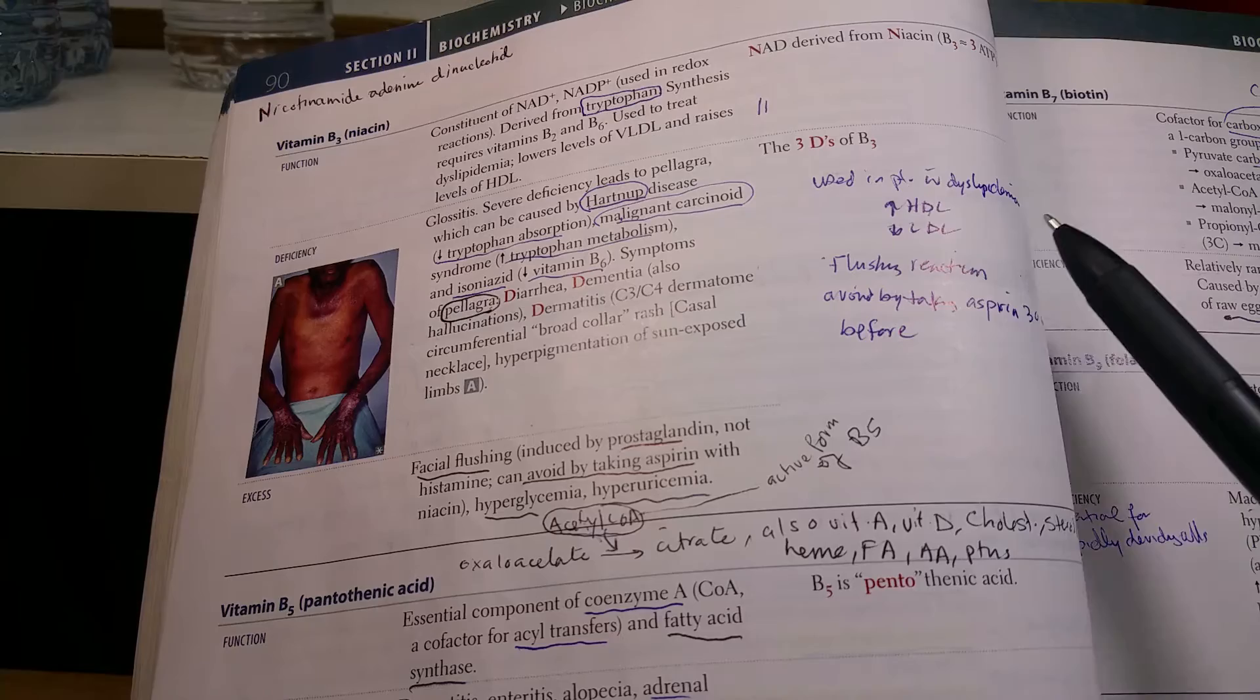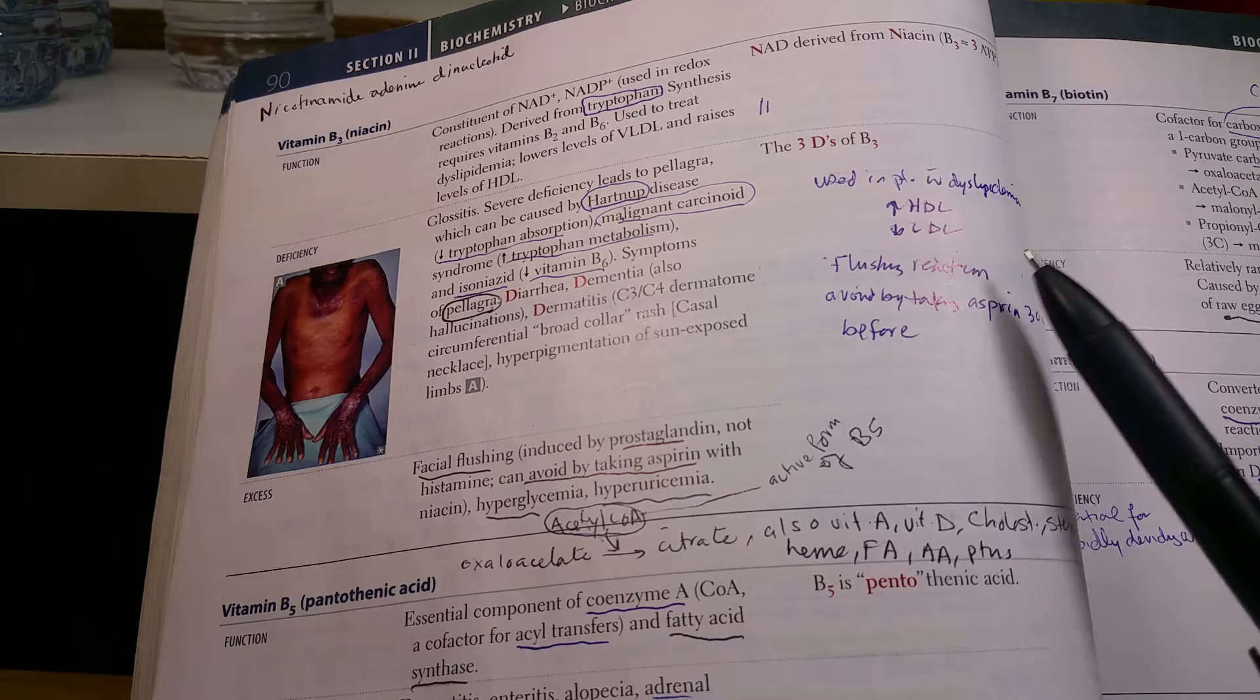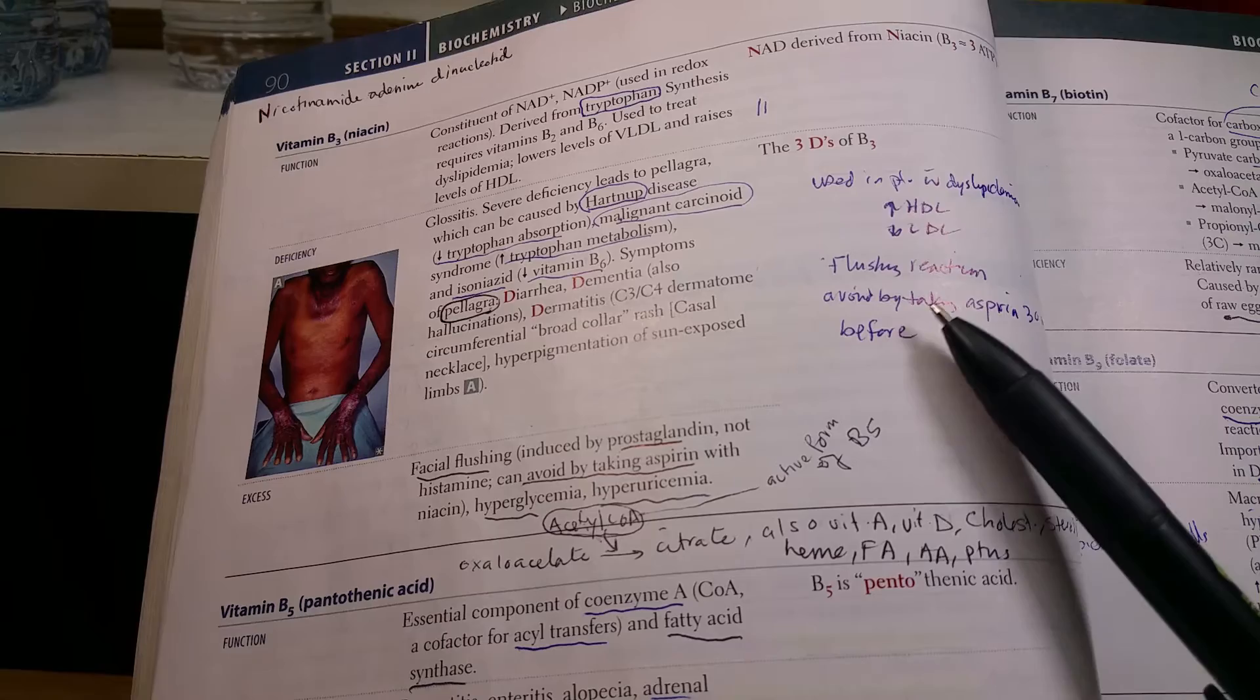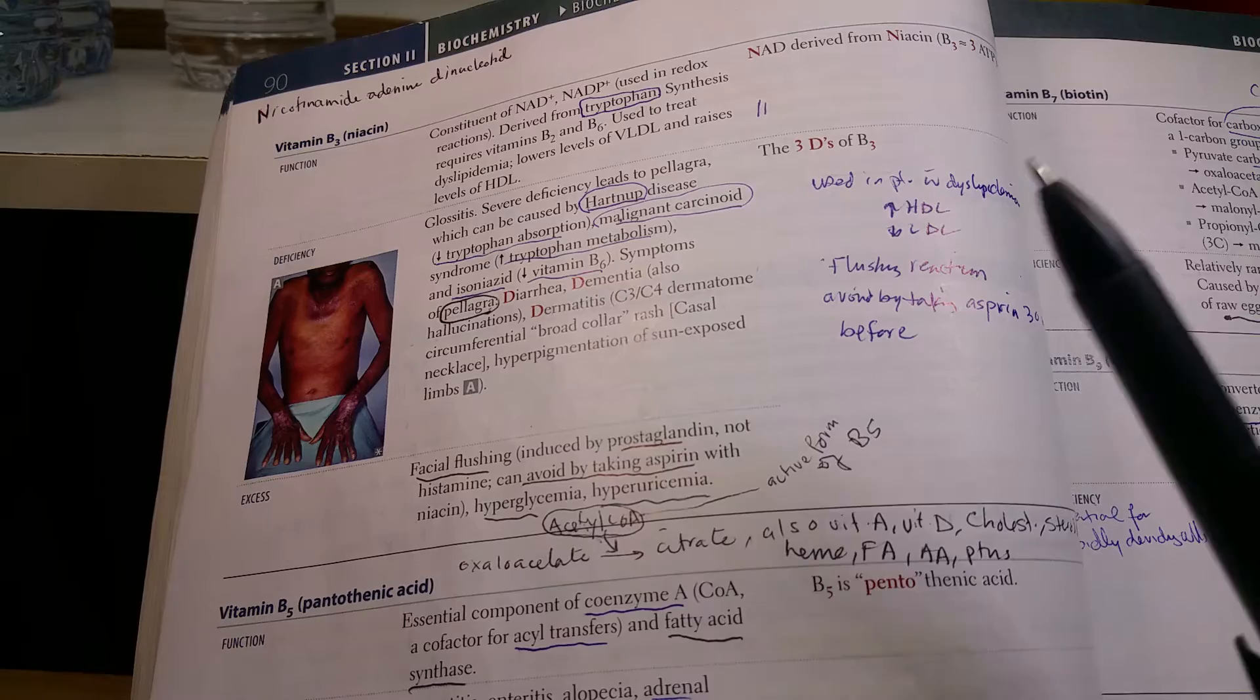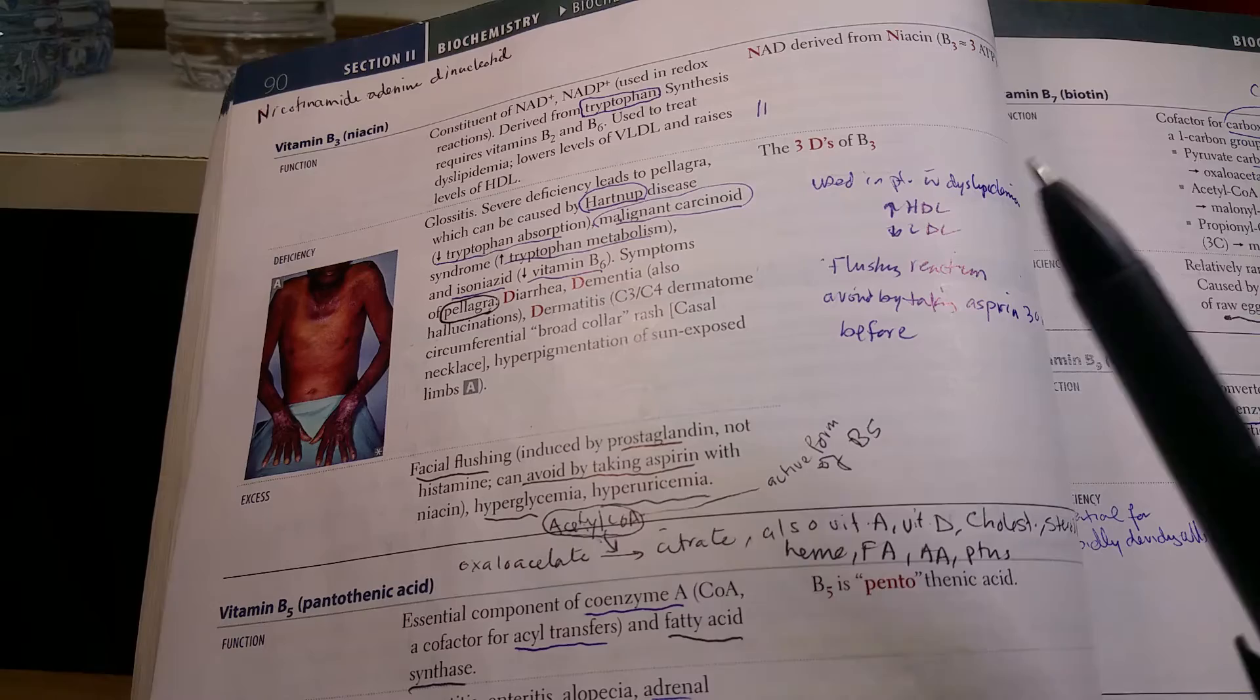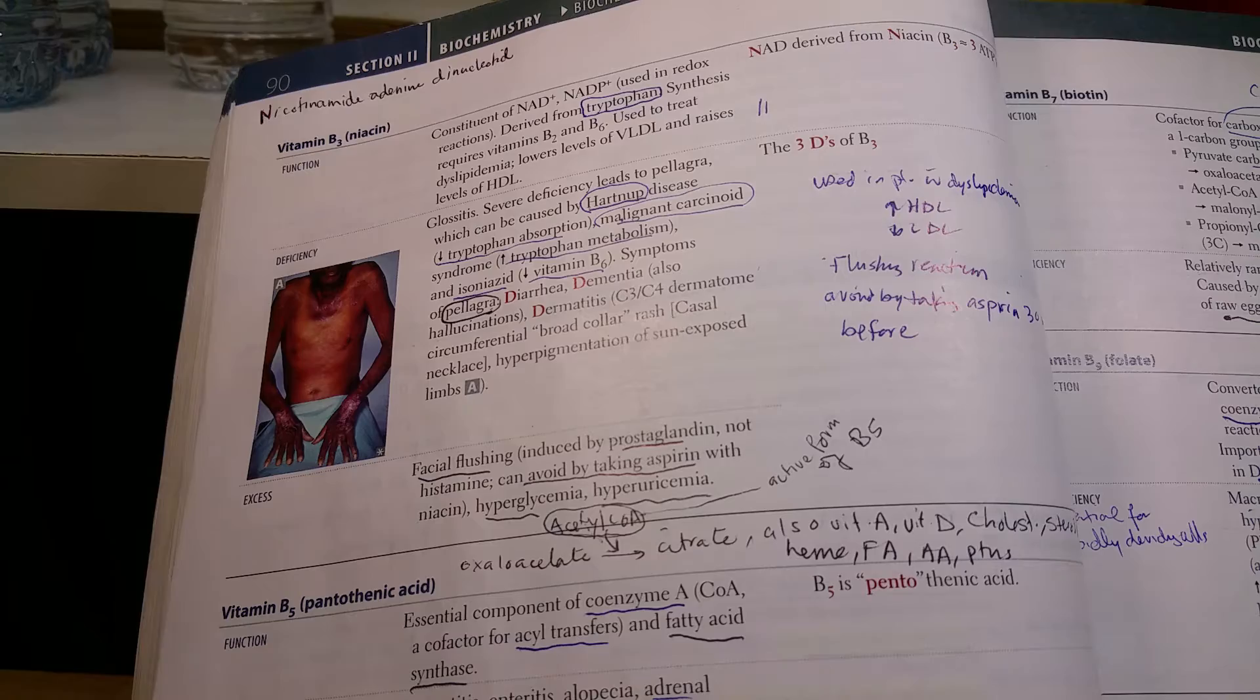It is used in hyperlipidemias or dyslipidemias. It increases HDL and decreases LDL. One of the side effects is that it causes a flushing reaction, which can be avoided by taking aspirin 30 minutes before. This is in the excess.